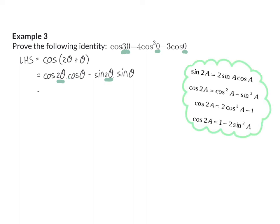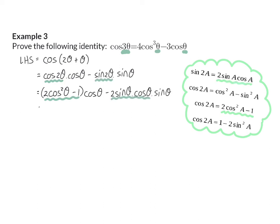For the cos double angle, we have three options, but since the right-hand side only has cos θ, I'm going to use the identity that has cos θ in it: 2 cos² θ minus 1. My sin double angle becomes 2 sin θ·cos θ. Next, I simplify the two terms: for the first term I multiply cos θ in, and in the second term I multiply sin θ and write it as sin² θ. Since the right-hand side has no sin θ, I use the identity sin² θ equals 1 minus cos² θ.